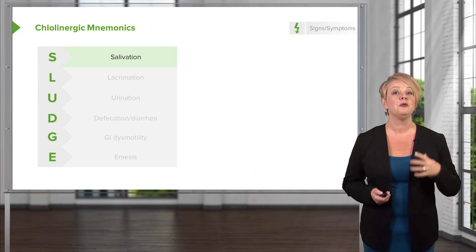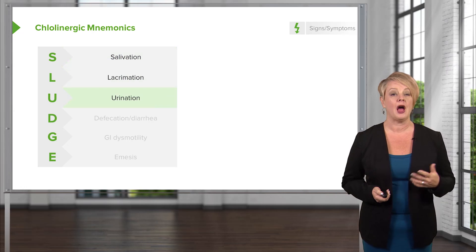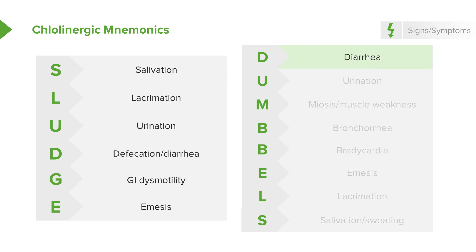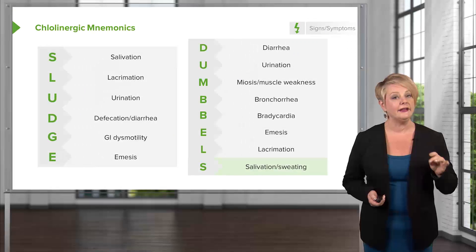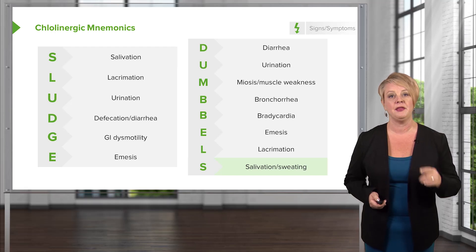You can remember the cholinergic toxidrome by thinking about fluids pouring out of every orifice. The SLUDGE mnemonic includes: Salivation (copious oral secretions), Lacrimation (copious tearing), Urination (commonly incontinent), Defecation or diarrhea, GI dysmotility and Emesis. Another mnemonic is DUMBELS: Diarrhea, Urination, Miosis or muscle weakness, Bronchorrhea, Bradycardia, Emesis, Lacrimation, and Salivation. If there's fluid pouring out of every orifice, think cholinergics.